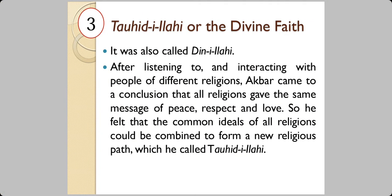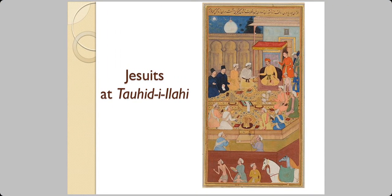There is something else known as Tauhid-i Ilahi, also known as the divine faith. It was like a religion but it was not a religion. After interacting with people of different religions, Akbar concluded that all religions give the same message of peace, respect, and love. He felt the common ideals of all religions could be combined to form a new religious path. He called this Tauhid-i Ilahi and himself became the guide for it. In this Mughal painting, the two gentlemen on the left in dark dress are Jesuits — Christians — who had the same access to Tauhid-i Ilahi discussions as Hindus, Zoroastrians, or people from any other religion, even Islam.